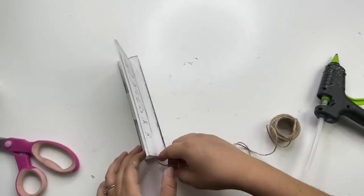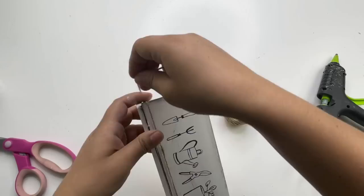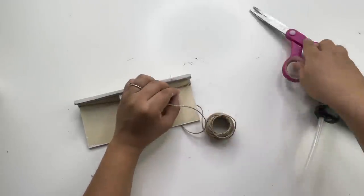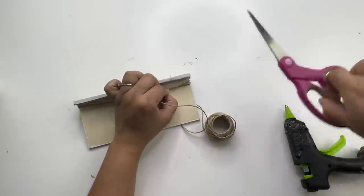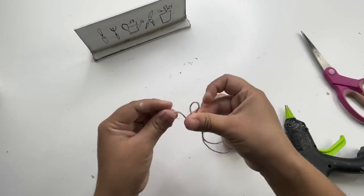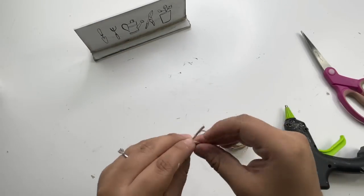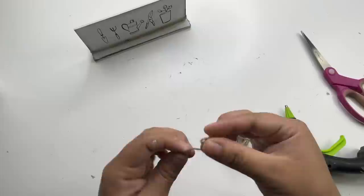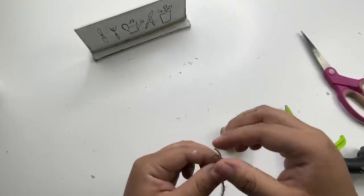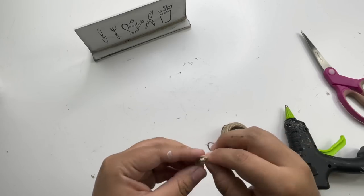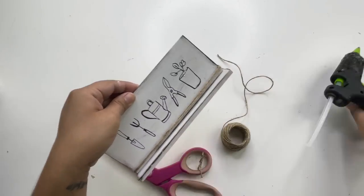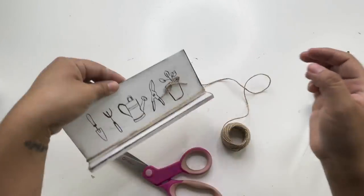Now to decorate this a little more, I'm going to just wrap around some jute twine at the bottom and make a small little ball to add it to the top. And that is it for this beautiful decor. Now this is perfect for a tiered tray.